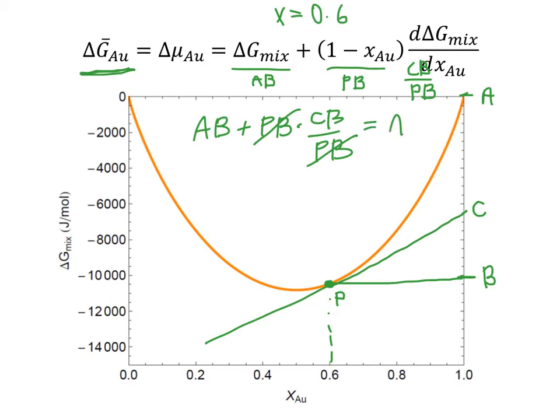That's going to give us just AC. So what this tells us is that this value that we're interested in, delta G bar of AU, is given by this line segment AC, which really just means that we can find the value of delta G bar at any given value of X by drawing the tangent to the curve there and reading off the value of the intercept.